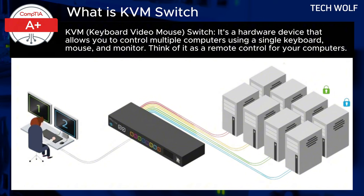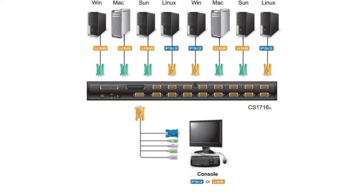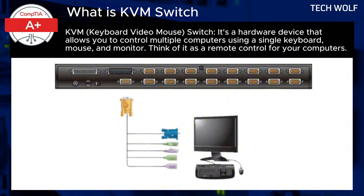Here is how it works. Physical connection: you connect multiple computers to a KVM switch using cables, usually USB, PS2, or HDMI. Then you connect a single keyboard, single mouse, and monitor to the KVM switch. To switch between computers, you simply press a button or combination of keys on the KVM switch, and the keyboard, mouse, and monitor inputs are redirected to the selected computer.